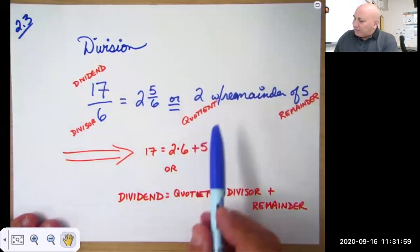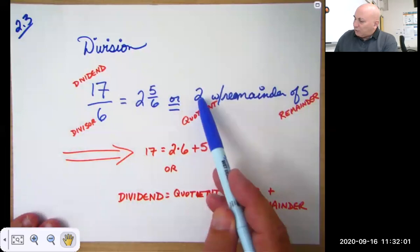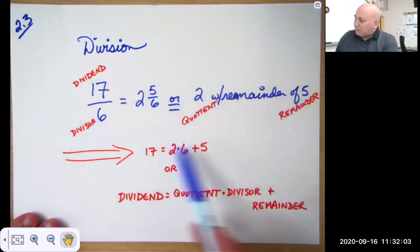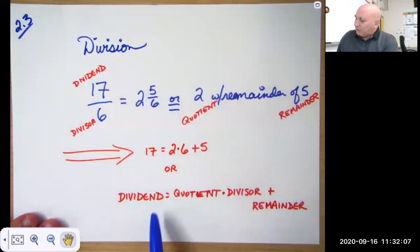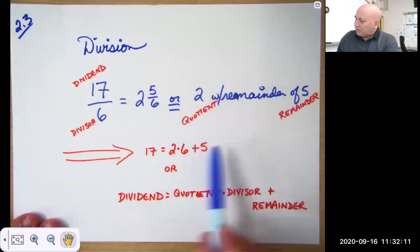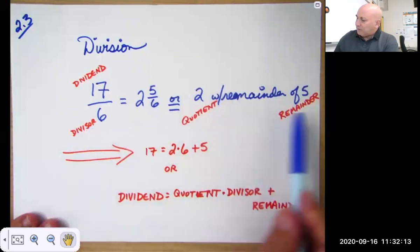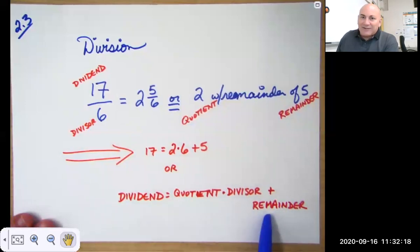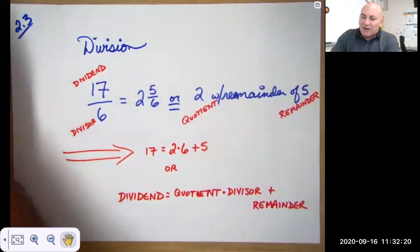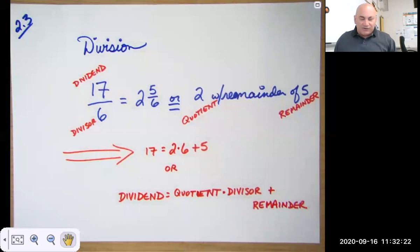So in other words, two times six plus five will get you the original dividend. So the original dividend is the quotient times the divisor plus the remainder. Don't worry about memorizing this, that's unnecessary. I want you to see how this works with numbers.